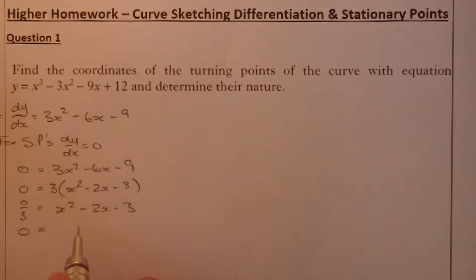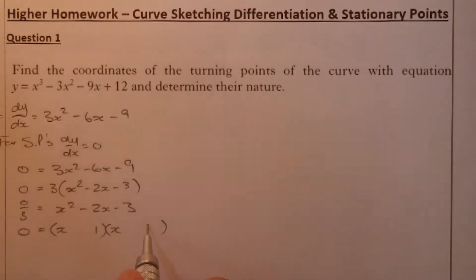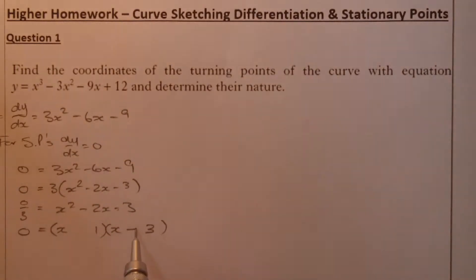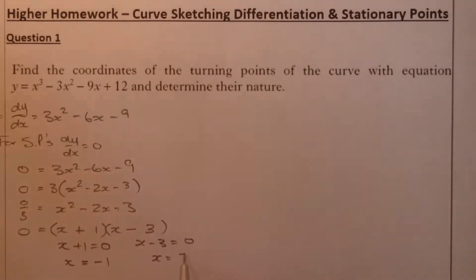Factorising x squared minus 2x minus 3, I'm going to put it into two brackets. For x squared I know that's going to be x and x. For the 3, the numbers that make 3 will be 1 and 3. The sign is negative, so one of them will be negative and one positive — the biggest one is negative. That gives me x plus 1 equals zero, so x equals minus 1, and x minus 3 equals zero, so x equals 3.